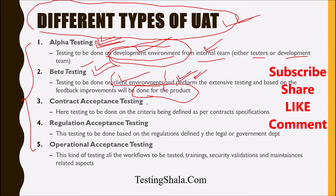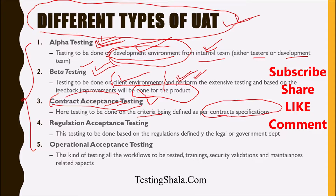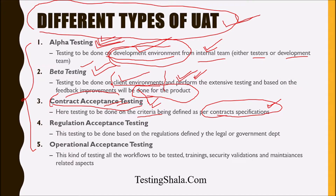The third type is Contract Acceptance Testing. This testing is performed based on certain criteria defined in the contract specification. The criteria defined in the contract are validated from the client's perspective, and that kind of testing is called Contract Acceptance Testing.